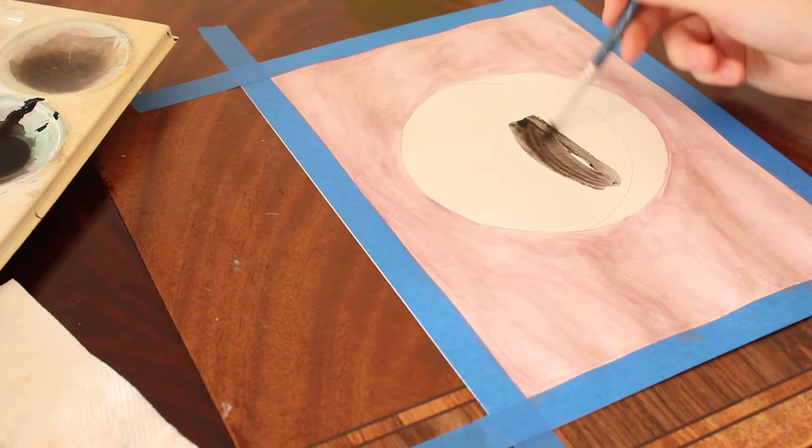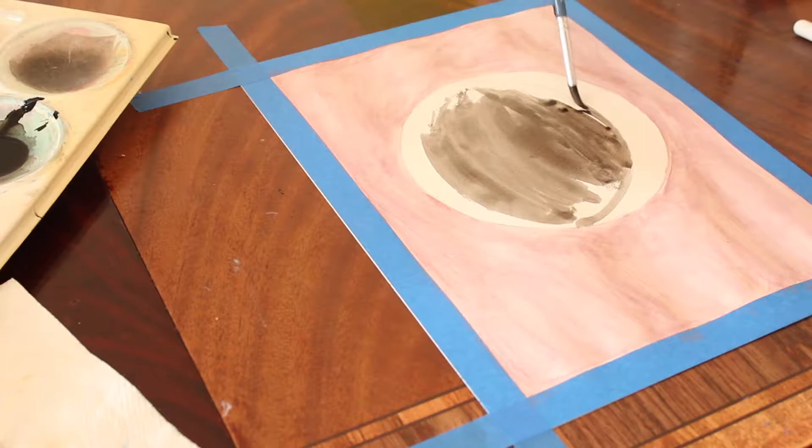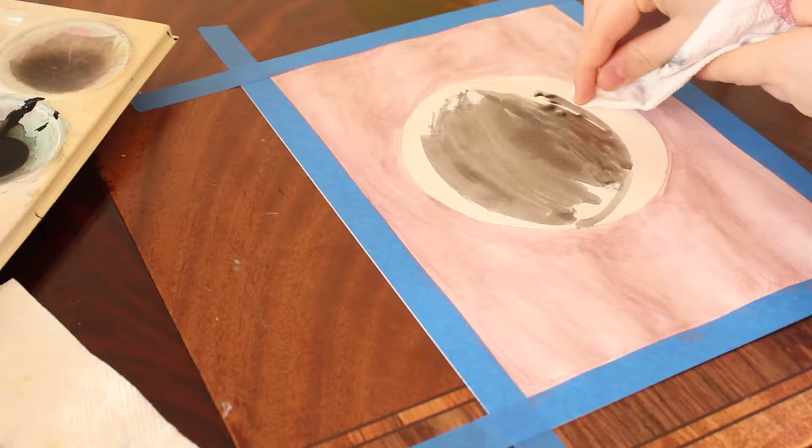I took black and put a bunch of water in it because the black in her artwork is also very transparent with lots of splotches. If you mess up you can just take a paper towel and it will soak up the water and pigment.